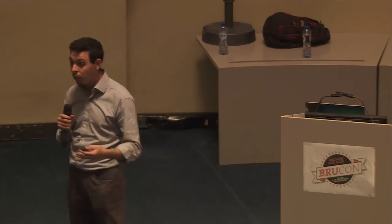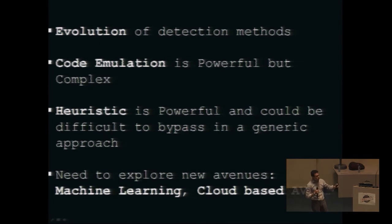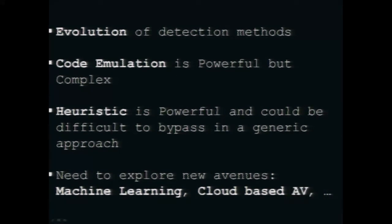The problem with API junk injection is significant performance impact — there are many repeated function calls. However, it is generic for bypassing this sort of heuristic detection, unlike API translation which is less generic since you need to come up with a translation for every signature. API translation has little or no performance impact. If you have an idea for something that is both generic and has no performance impact, we'd love to hear it.